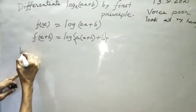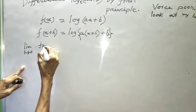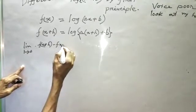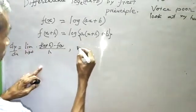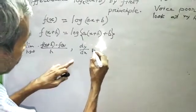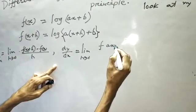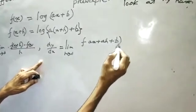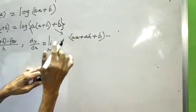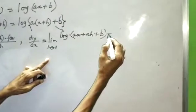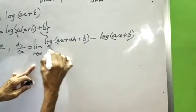Now limit h tends to 0. dy/dx = limit h tends to 0 of [f(x+h) minus f(x)] by h. Therefore dy/dx = limit h tends to 0 of [log(ax + ah + b) minus log(ax + b)] by h.